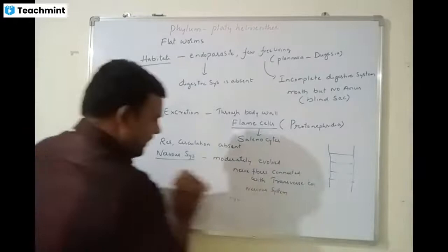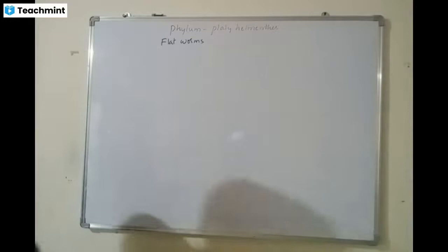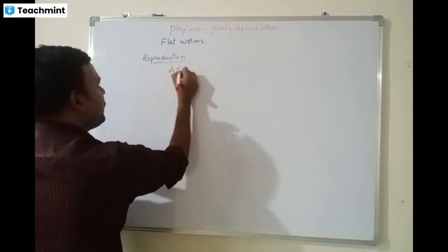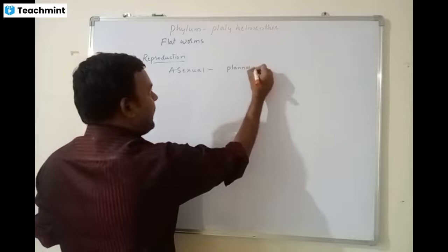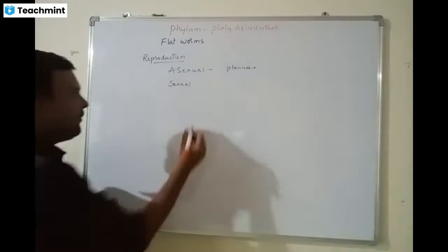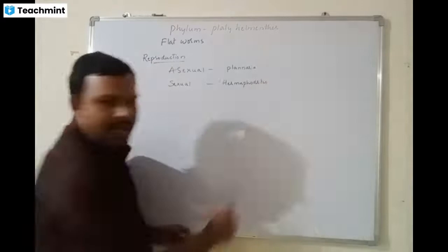Moving on to the reproductive system — in free-living forms, both asexual and sexual reproduction occur. For example, Planaria reproduces asexually by simple fragmentation. Sexual reproduction happens through gamete formation. They are mostly hermaphrodites, meaning they are bisexual.